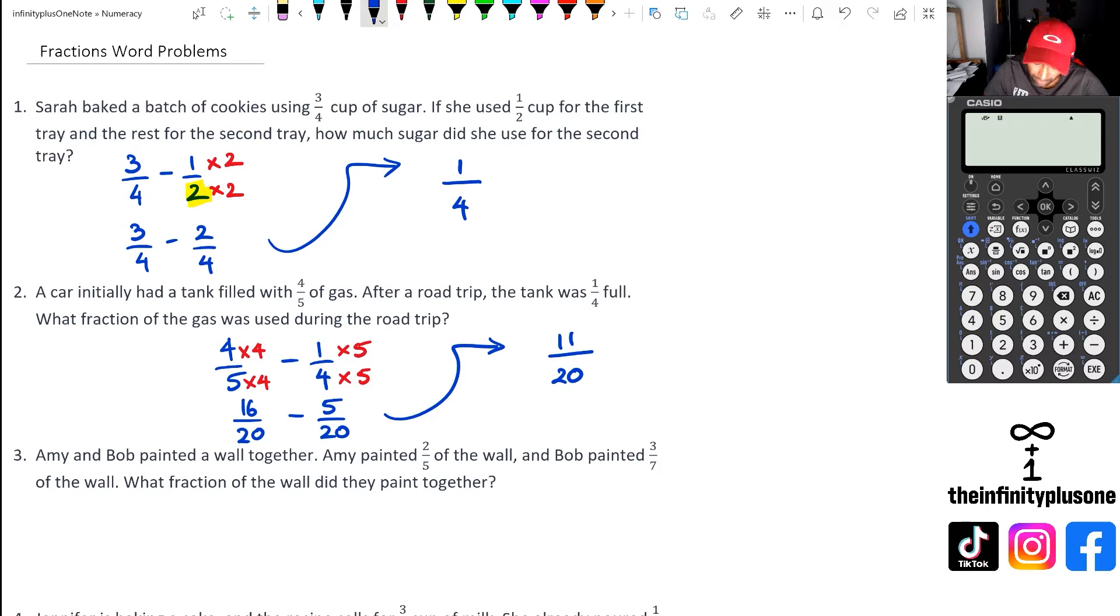Looking at question number three, we've got Amy and Bob painted a wall together. Amy painted 2/5, Bob painted 3/7. And what fraction of the wall did they paint together? So once again, I would like to add these two numbers here. And if you think about it between seven and five, the lowest common multiple is 35. Because the denominators are different, I've got to make them the same. So I'm going to do five times seven, and two times seven for the left hand side fraction. And for the right hand side fraction, I'm going to do seven times five, and three times five. And when I do this, I get 14/35 plus 15/35. So from here, what I can say is 35 is the denominator, and then 14 plus 15 is going to give me 29.